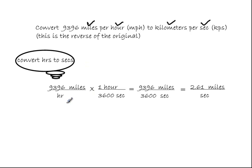So I start off with 9,396 miles per hour, and the unit fraction that I'm using is one hour equals 3,600 seconds. And I'm putting the hour on top and the seconds on bottom because I want to be able to cancel the hours.